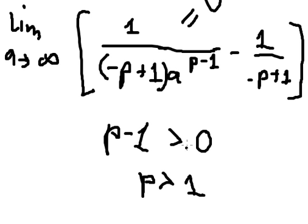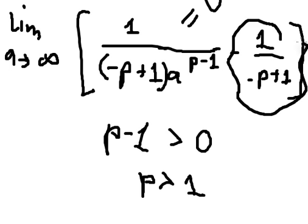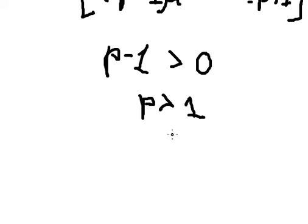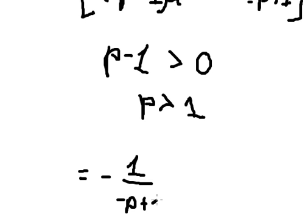Now if the integral converges, the limit term equals zero, and we are left with negative 1 over negative b plus 1, which equals 1 over b minus 1. This is the final answer. Thank you for watching.